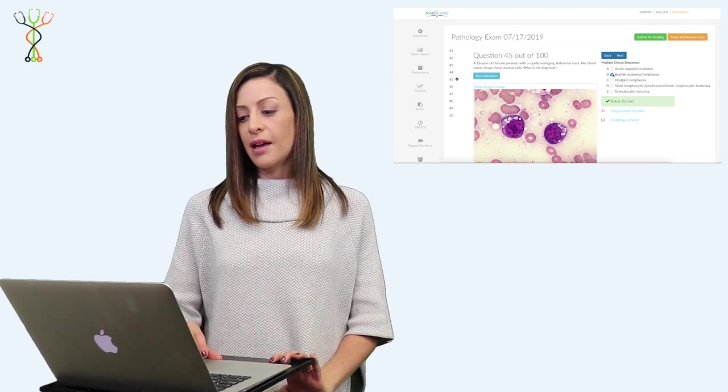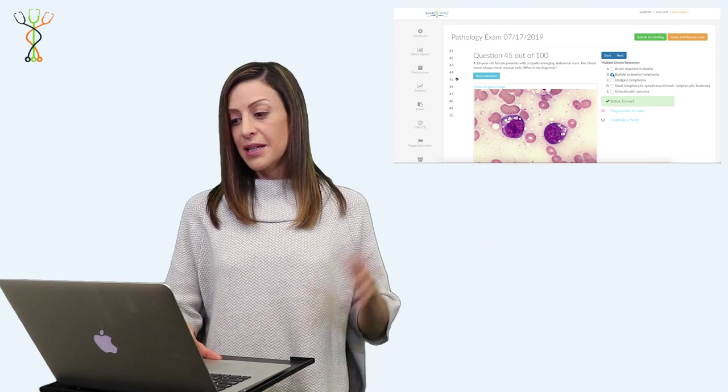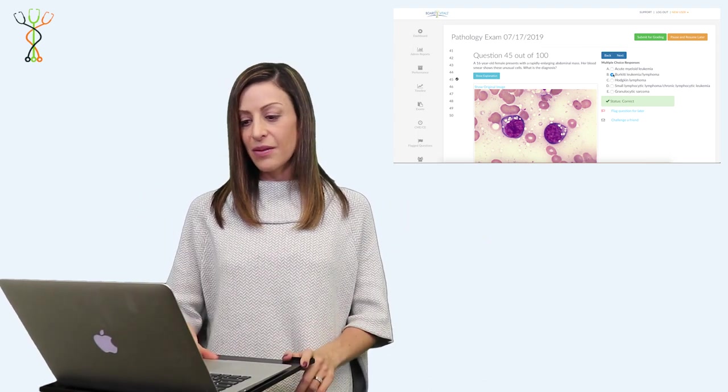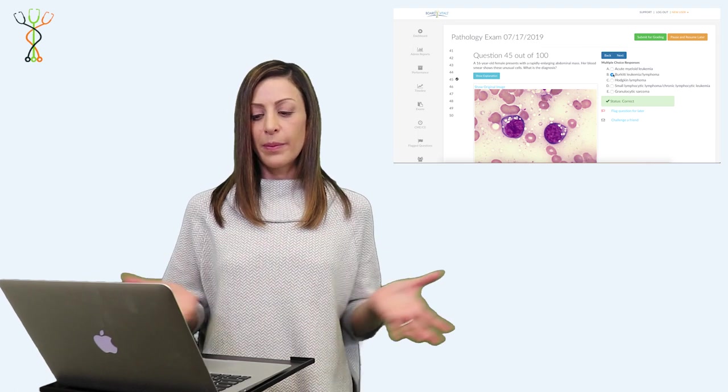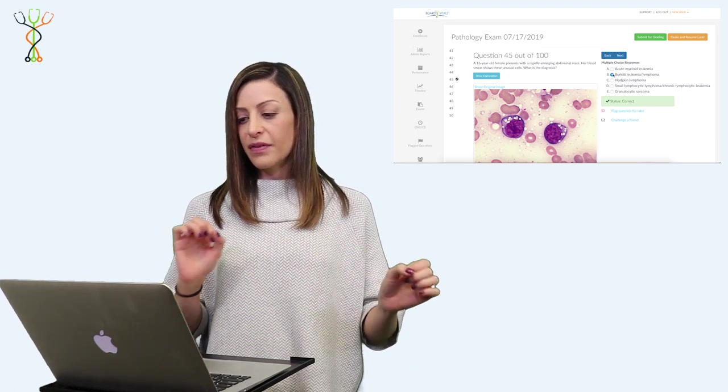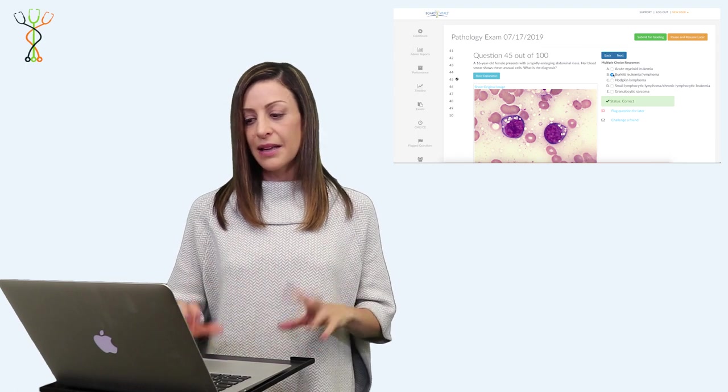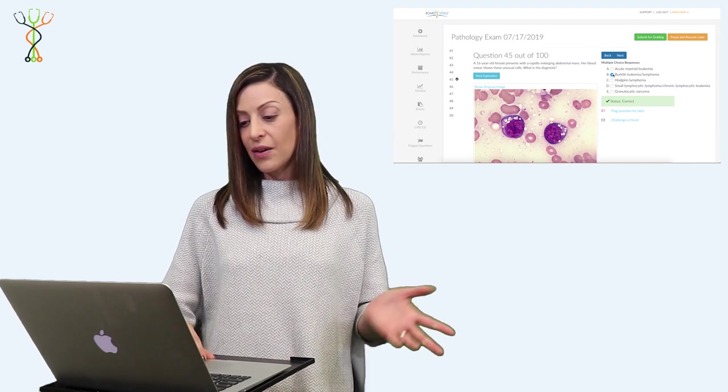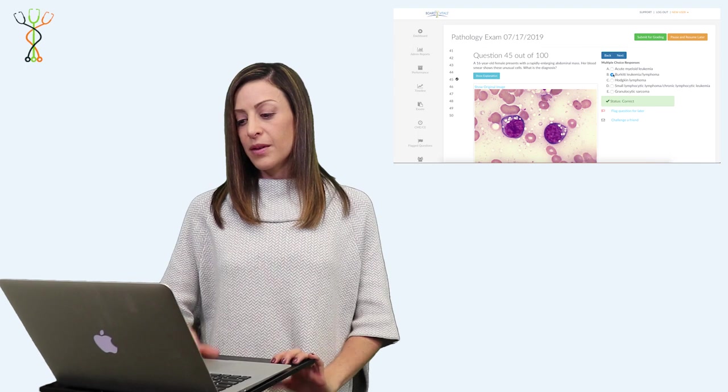In this question you see these benign histiocytes—those are actually the stars in the starry sky. These are large with abundant clear cytoplasm, and they have a lot of these little vacuoles in them. That's what makes them become the stars.